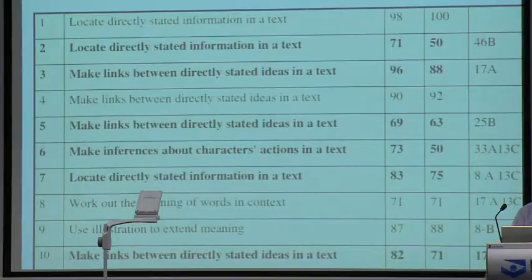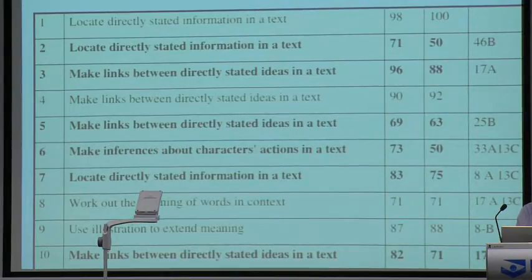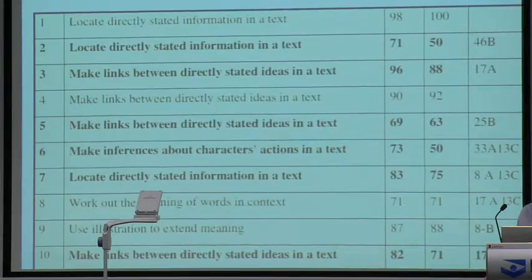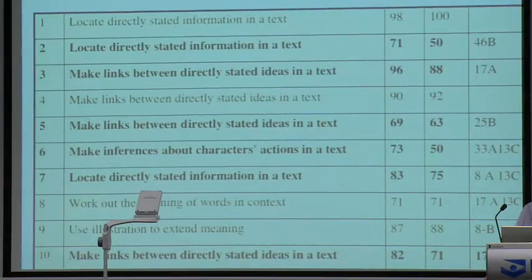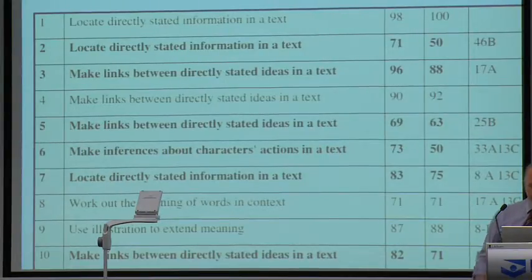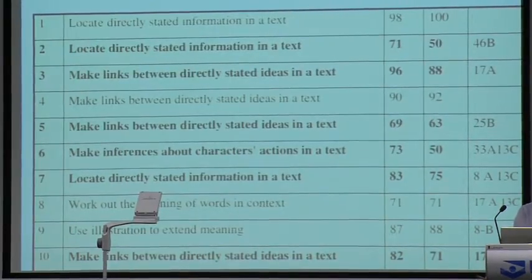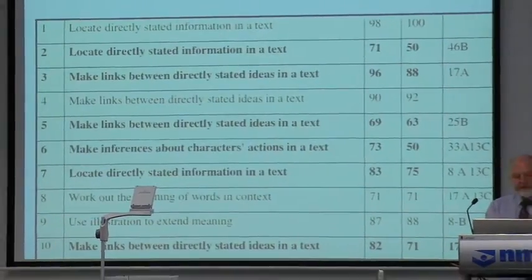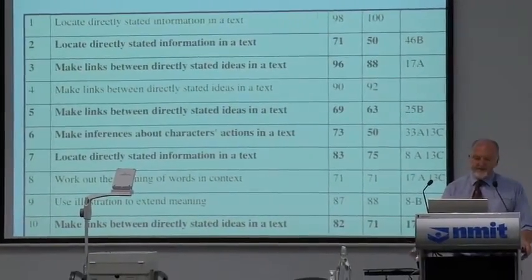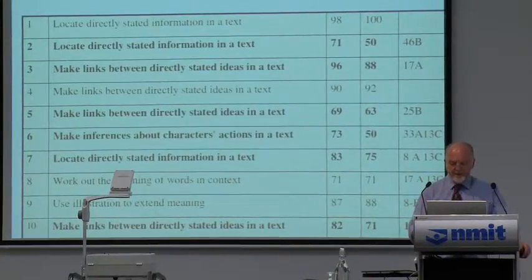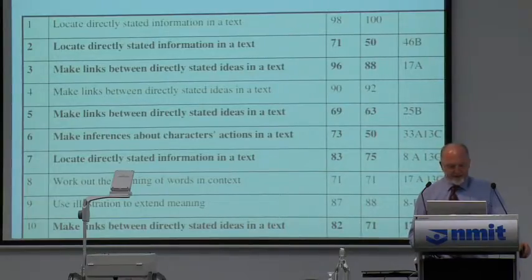Just so we could see where the kids' errors were occurring. Now when you look at that data — and this is like the online, on-demand data — you see interesting things. You can see that, say for item number 1, that was really measuring children's ability to locate directly stated information in a text. 98% of the kids answered it correctly, or in the school, 100% of the kids answered correctly.